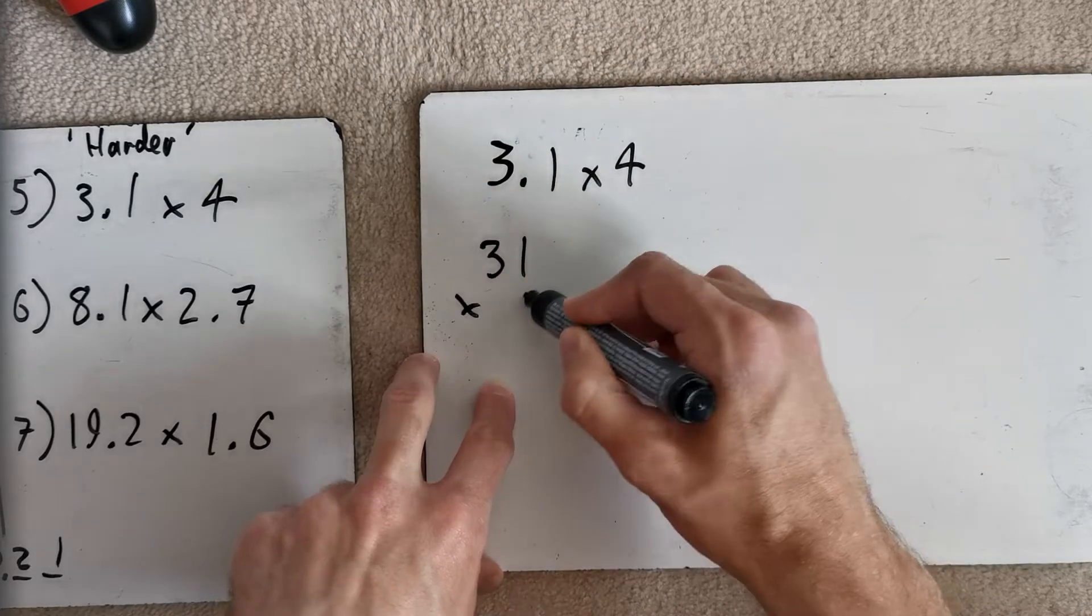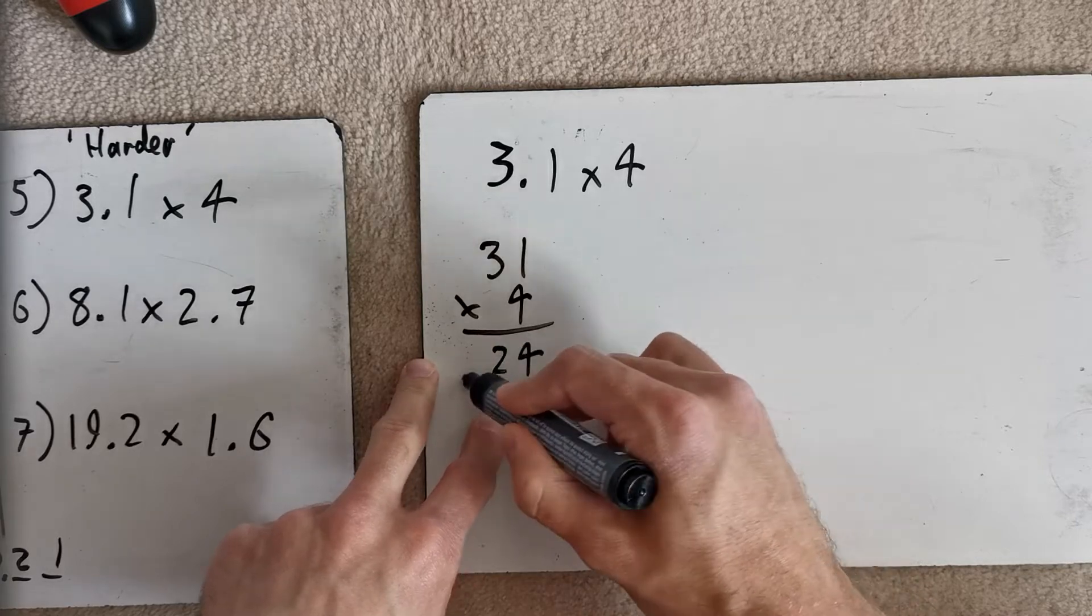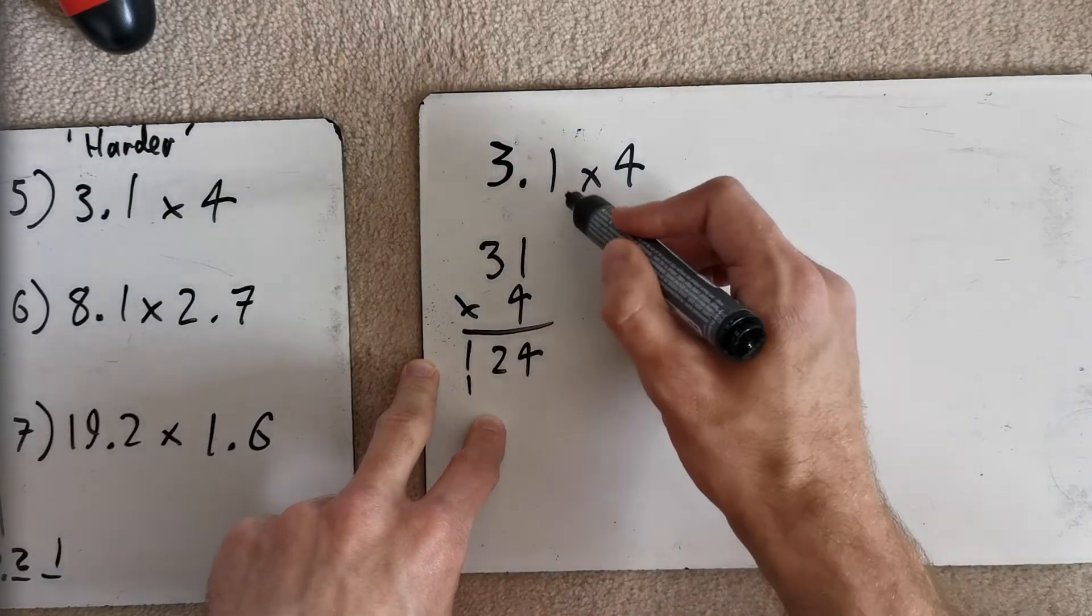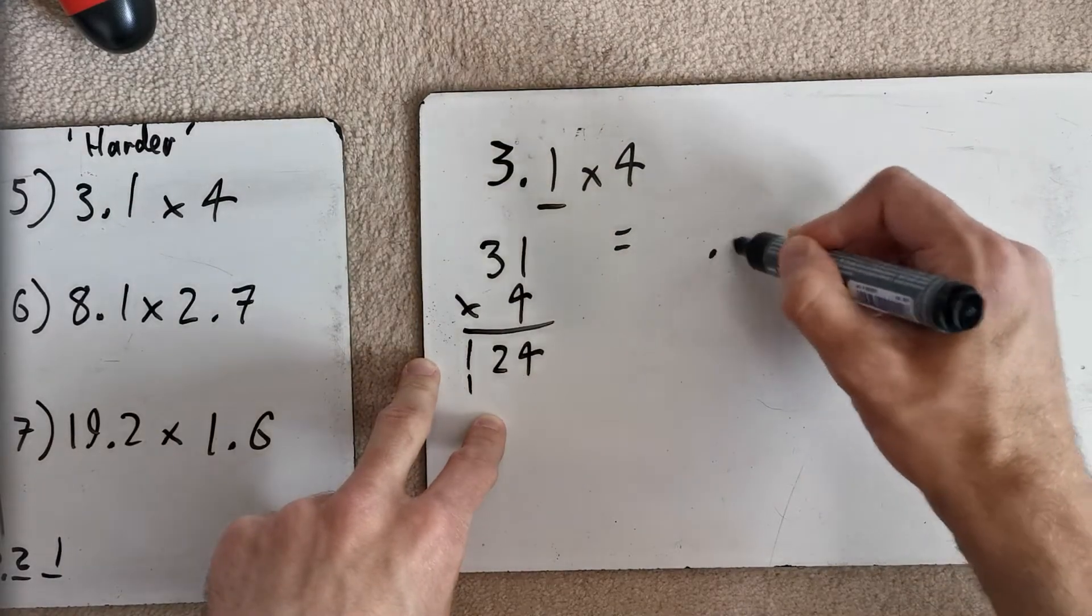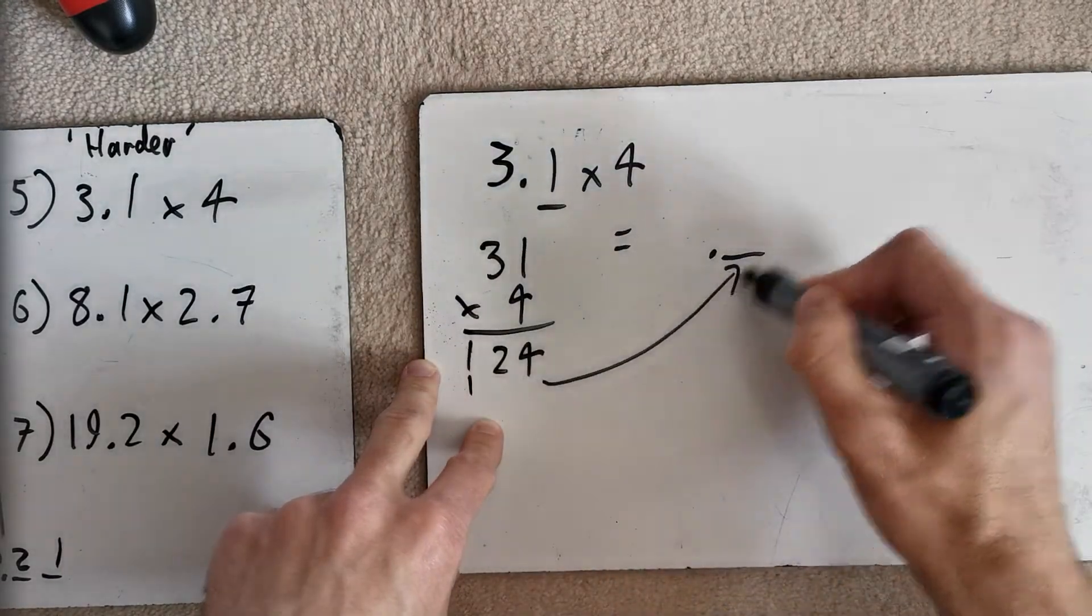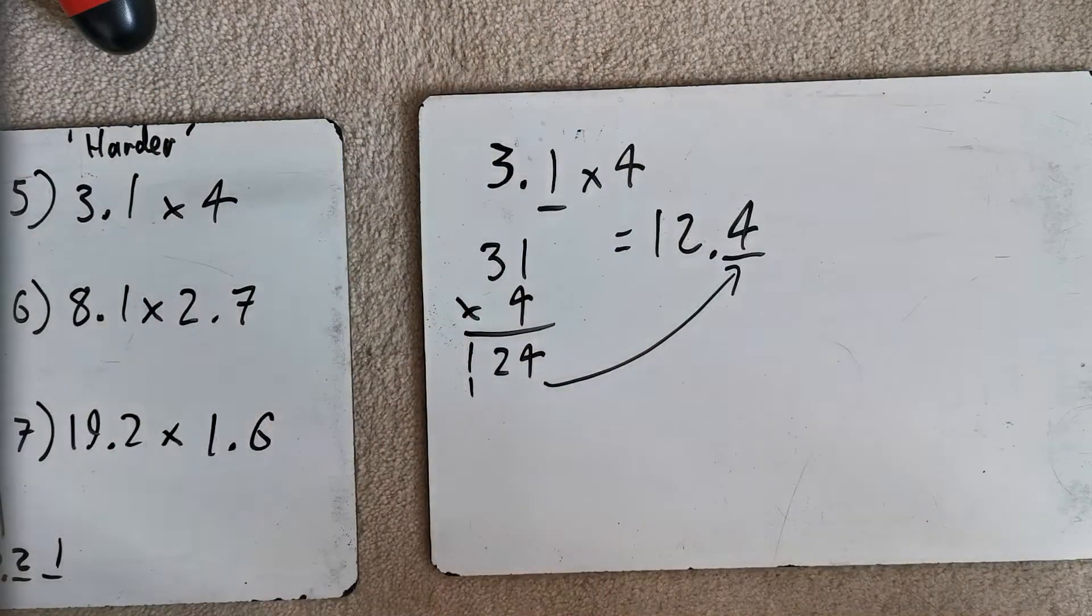And this one here. 4 times 4... 1 times 4 is 4. 3 times 4 is 12. Carry the 1. 124. Okay. 1 decimal place in the question. There's going to be 1 decimal place in the answer. 4 goes there. And then these flow over the decimal point. Okay.